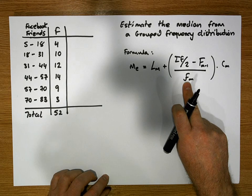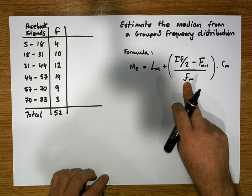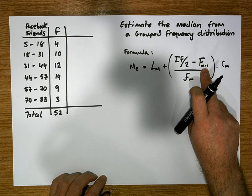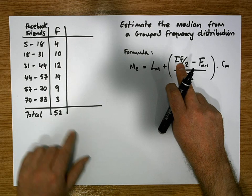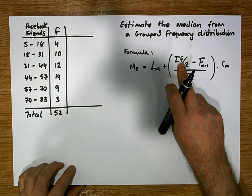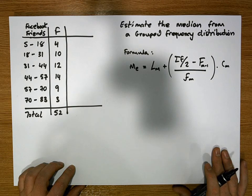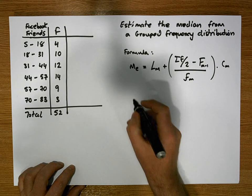Small f of m represents the actual frequency of the median class. Capital F of m minus 1 represents the cumulative frequency of the class before the median class. Sigma f is how many observations there are. So there's one, two, three, four, five stages or parts to this particular calculation.